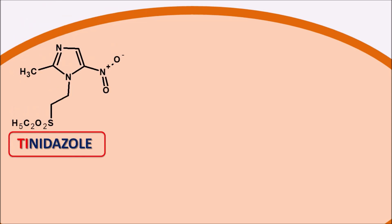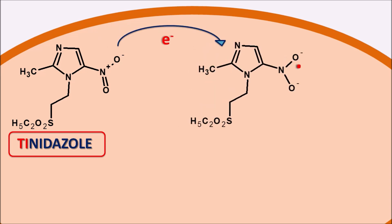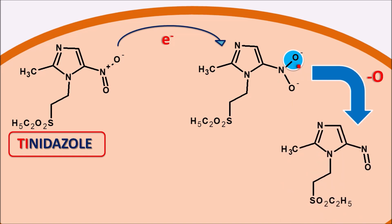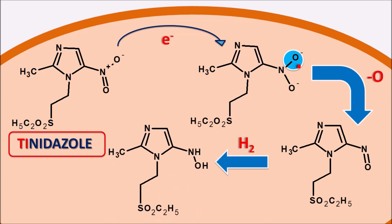The mechanism of action involves the nitro group of tinidazole, which can be easily reduced to produce reactive oxygen species intermediates. Tinidazole is reduced by accepting electrons, converting the nitro group first into a radical anion with a single electron on oxygen, then losing an oxygen to form a nitroso derivative. Further reduction by addition of hydrogens produces a hydroxylamine group.